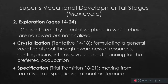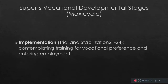Specification is the transition between ages 18 and 21, moving from tentative to a specific vocational preference. Implementation is around 21 to 24 years old — more on trial and stabilization — where they are completing training for their vocational preference and entering employment. These are ideally college students who have already graduated, finished their on-the-job trainings, and are entering the world of work.